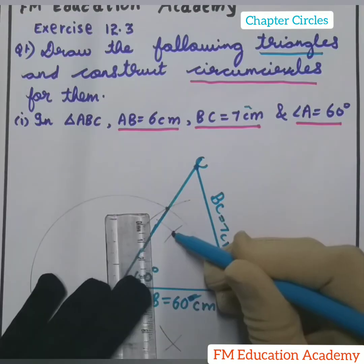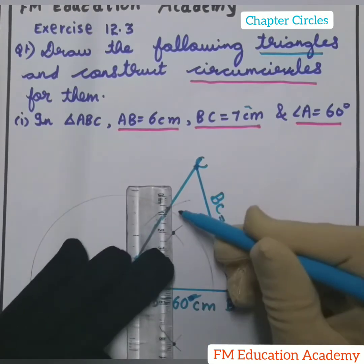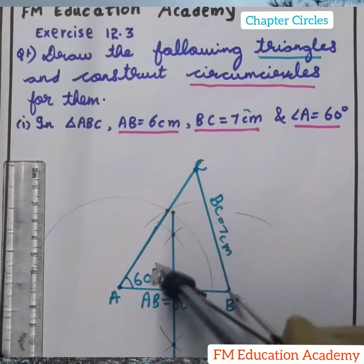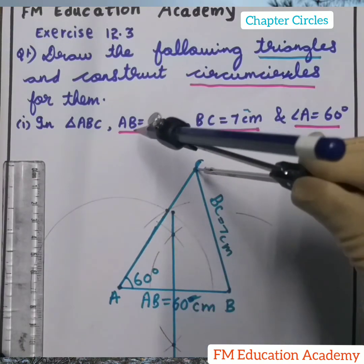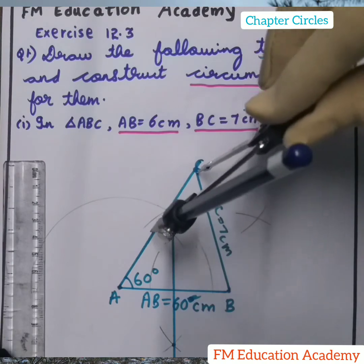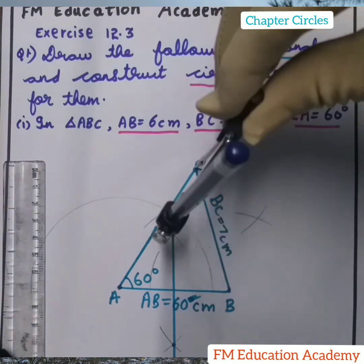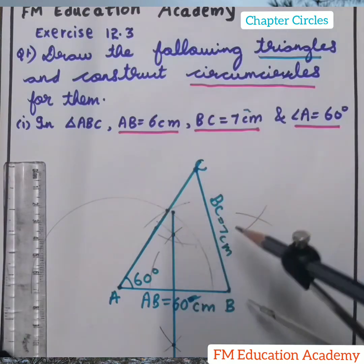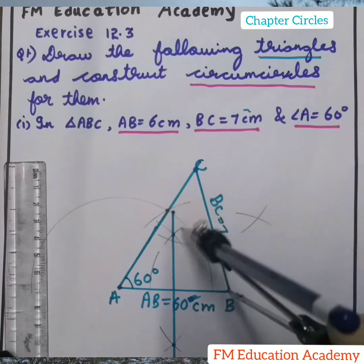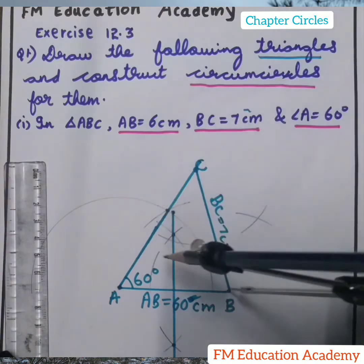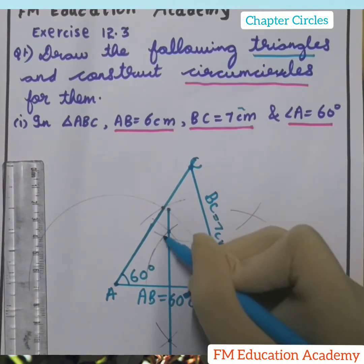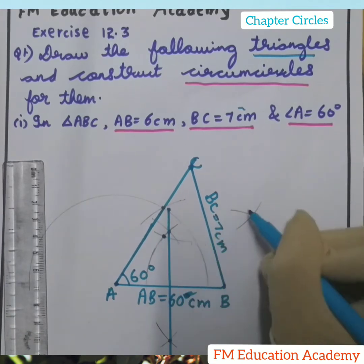Join the two arc points — this is one point and this is the other. Similarly, draw the perpendicular bisector of BC using the same radius. Don't change the radius when drawing perpendicular bisectors; be very careful and hold the compass as shown. Draw the arcs from both ends of BC. These two points are the perpendicular bisector points of BC.